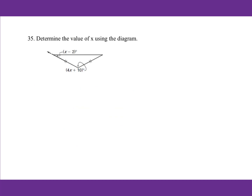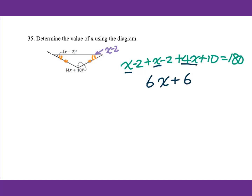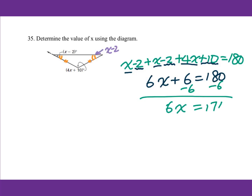For number 35, determine the value of X. If two sides are equal, this is an isosceles triangle, meaning the two base angles are equal. Therefore, each base angle is X minus 2. Setting up: X minus 2 plus X minus 2 plus 4X plus 10 equals 180. Combine like terms: 6X plus 6 equals 180. Subtract 6: 6X equals 174. Divide by 6: X equals 29.